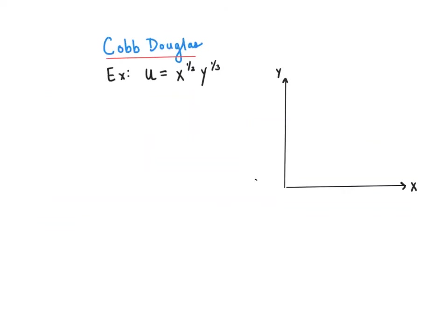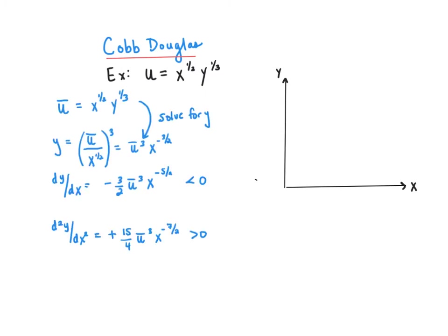I will now show you in two ways why each indifference curve for any Cobb-Douglas utility function is downward sloping and convex to the origin. One way of determining this is to fix u equal to some constant, solve for y, and then evaluate the signs of dy/dx and d²y/dx². Here, dy/dx is negative, revealing that each indifference curve is downward sloping. dy/dx being negative, coupled with d²y/dx² being positive, means that each indifference curve slopes down at a decreasing rate.